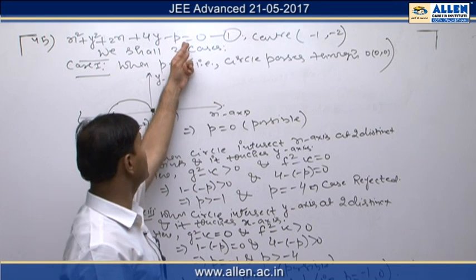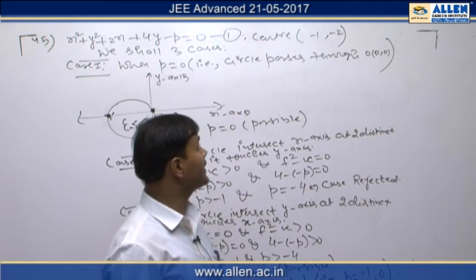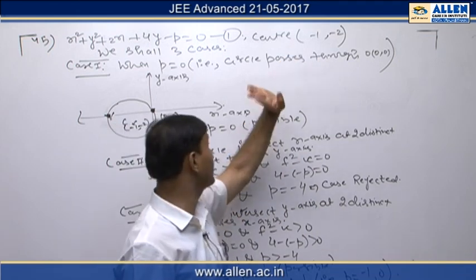In the given information, the circle will have center (-1, -2), which lies in the third quadrant. Here we shall consider three cases.